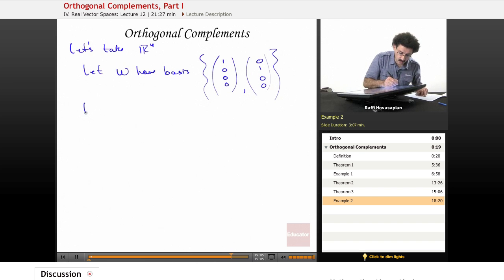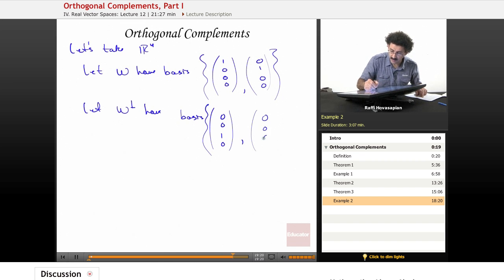And we will let W perp have basis (0, 0, 1, 0) and (0, 0, 0, 1), okay, as basis. Now,